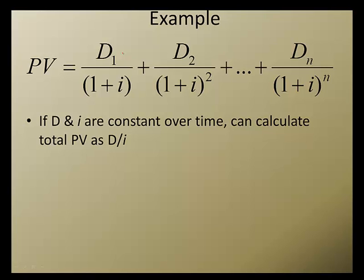There's a nice little math trick that says that if D is the same and i is the same, then we can calculate the present value as PV equals D divided by i. So we'll see an example of that.